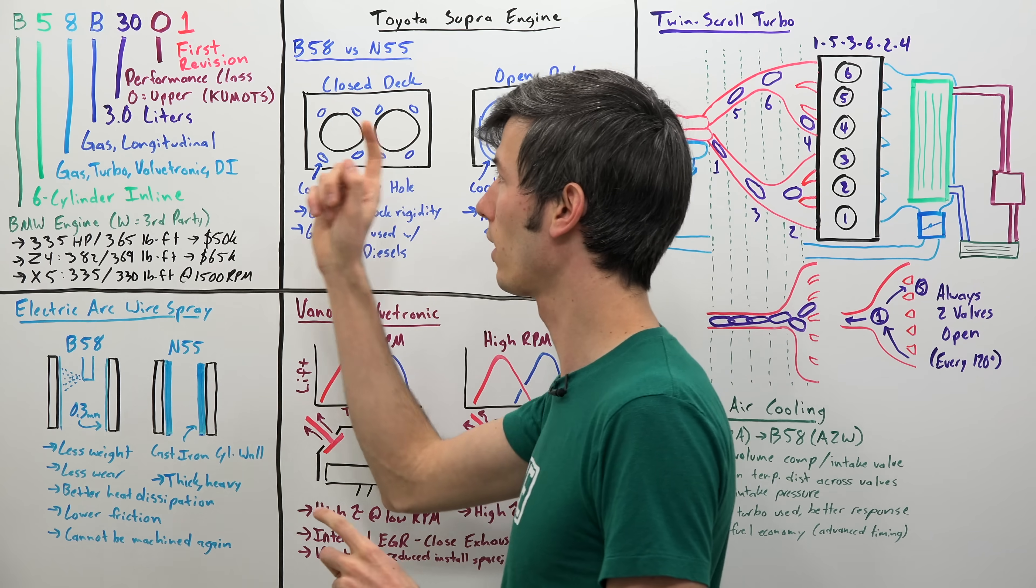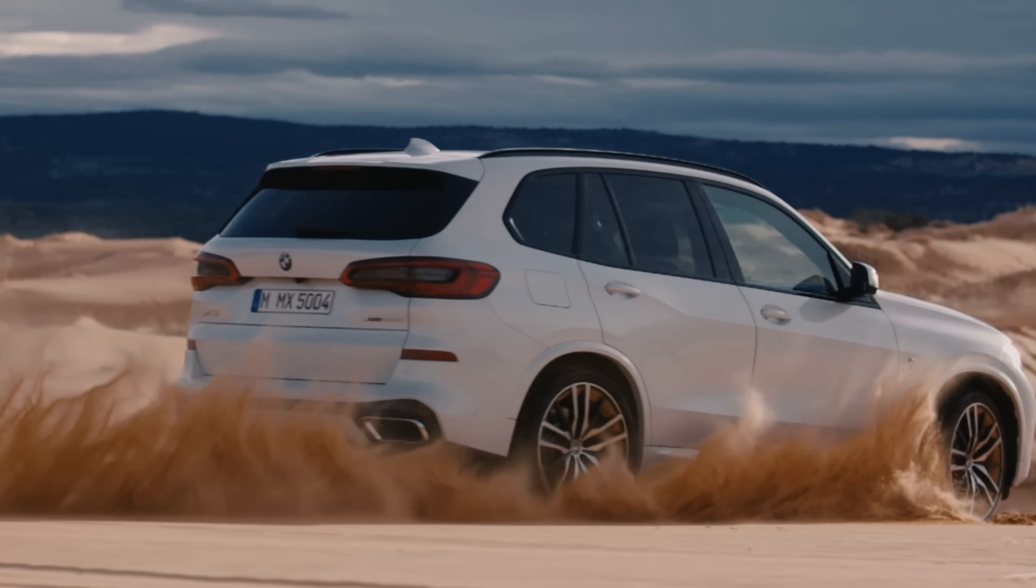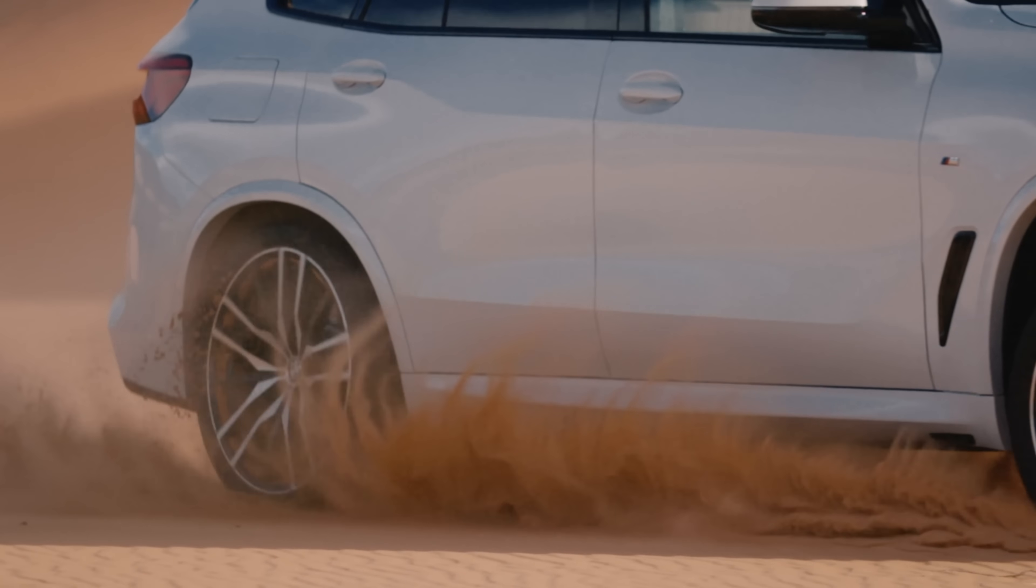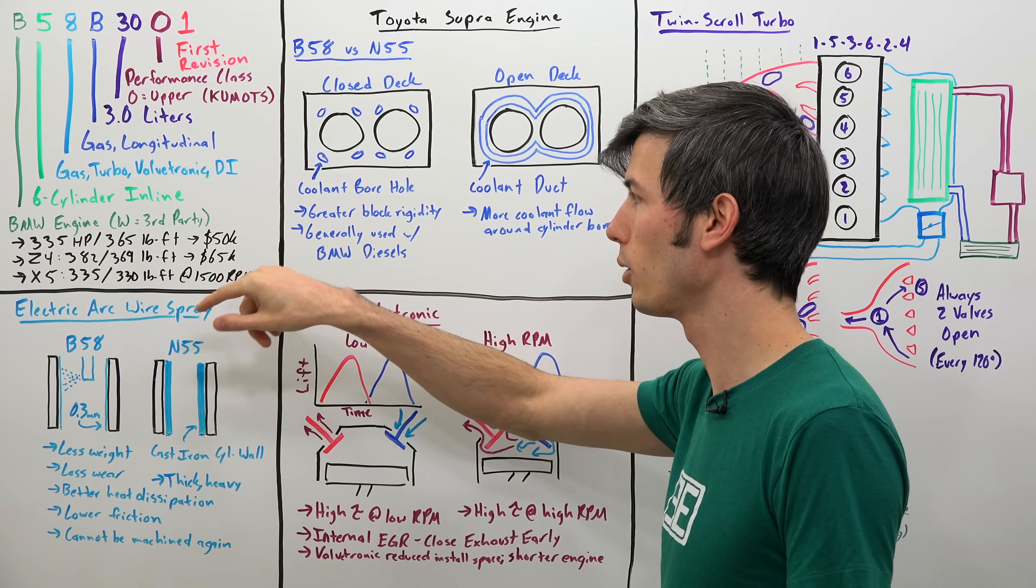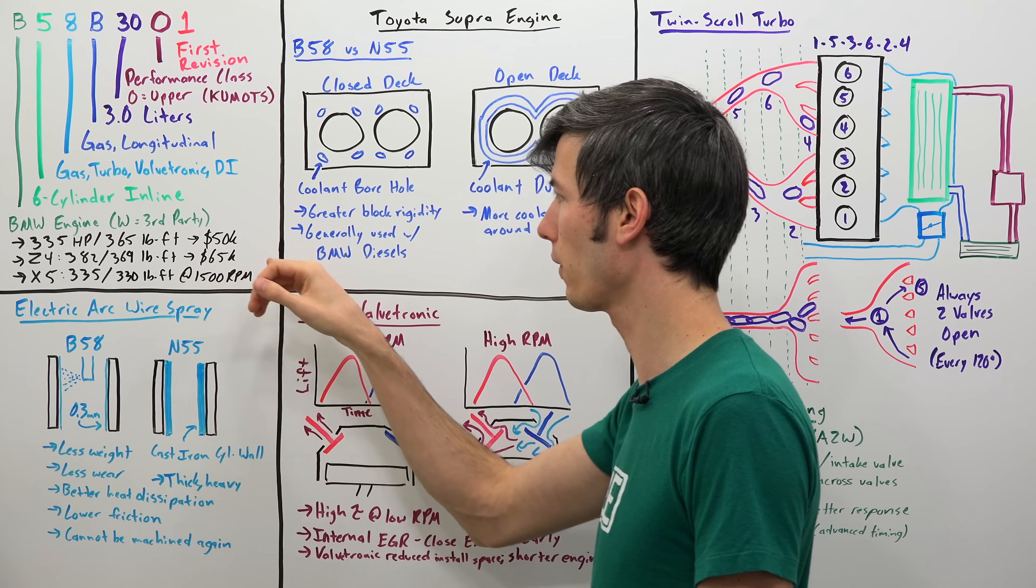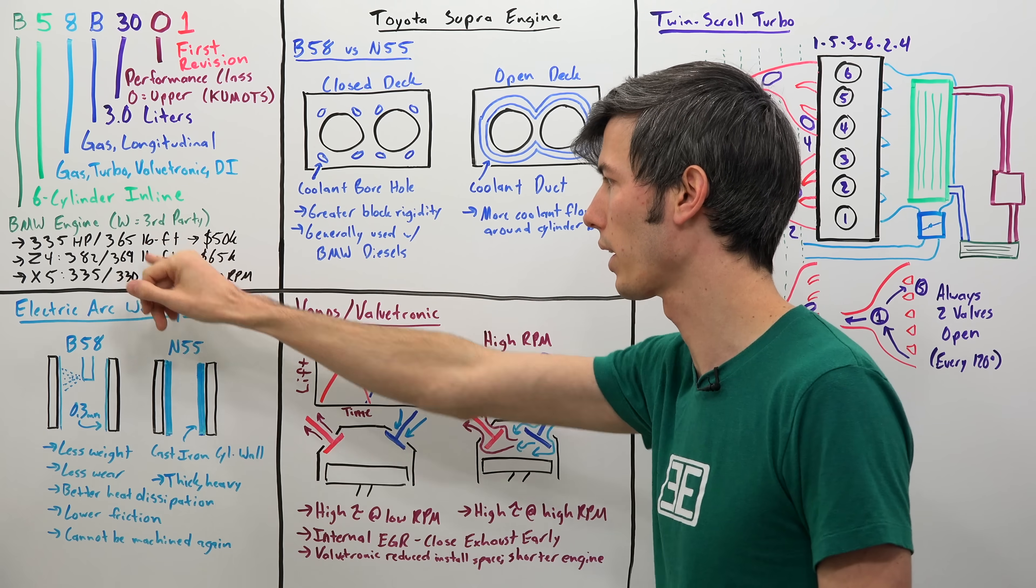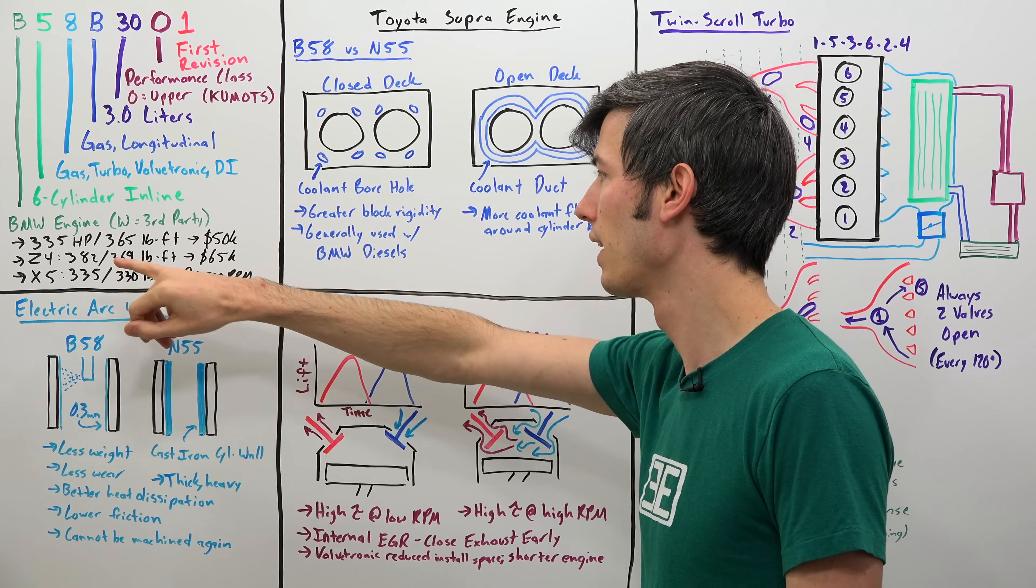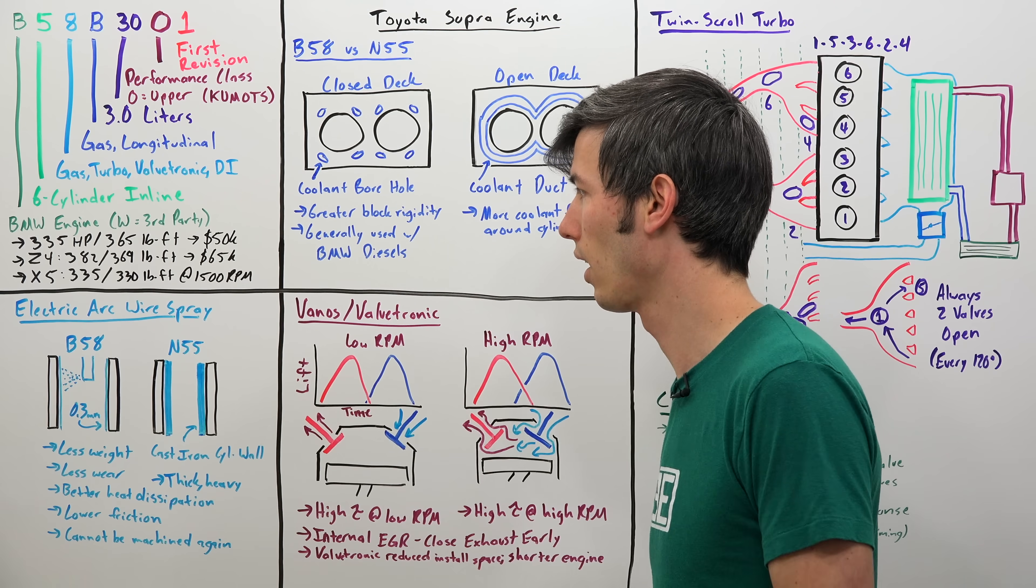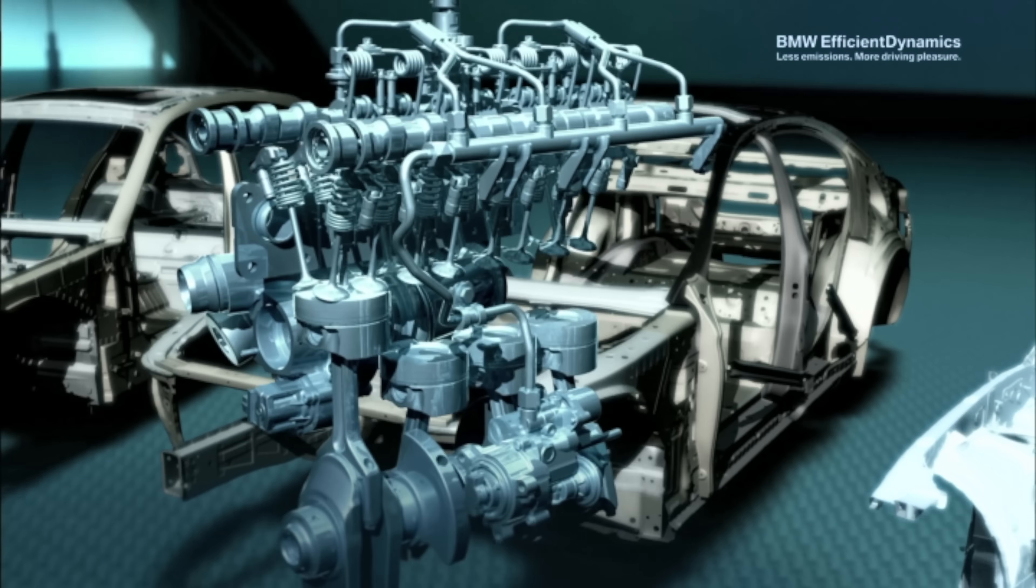And the engine that won the Wards Auto 10 Best Award for 2019 used in the X5 is making 335 horsepower, so same as the Supra, but down on torque, 330 pound-feet at 1500 rpm. So this does give us a clue. I do believe the Supra is going to have that turbo, that full boost come on very early. So I wouldn't be surprised if we were to see a very similar rpm number for where this torque is available. But used in the X5, this engine is getting that peak torque already at just 1500 rpm. Very cool.